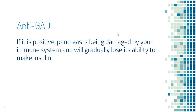Another marker we look at is called anti-GAD. It is an antibody produced by the immune system to destroy the pancreas. Normally the immune system produces antibodies to destroy enemies like bacteria or viruses. For some genetic reason, the immune system wrongly targets the pancreas and produces this antibody called anti-GAD to kill it. If anti-GAD is positive, that means your pancreas is being slowly damaged by the immune system and will eventually lose its ability to produce insulin.